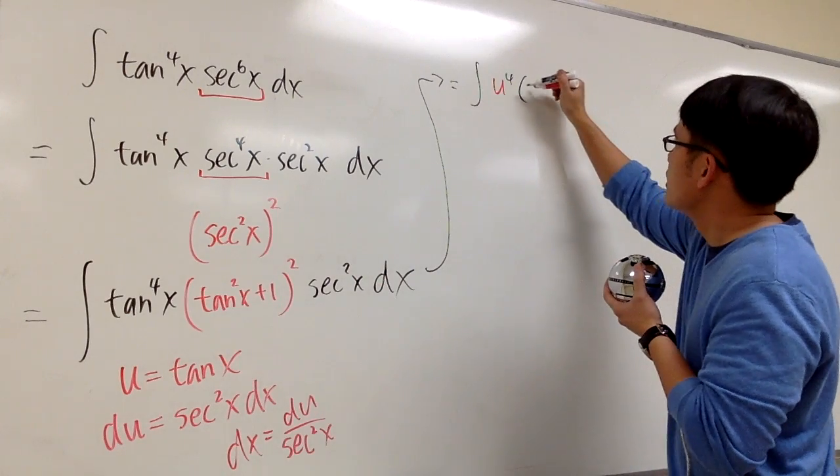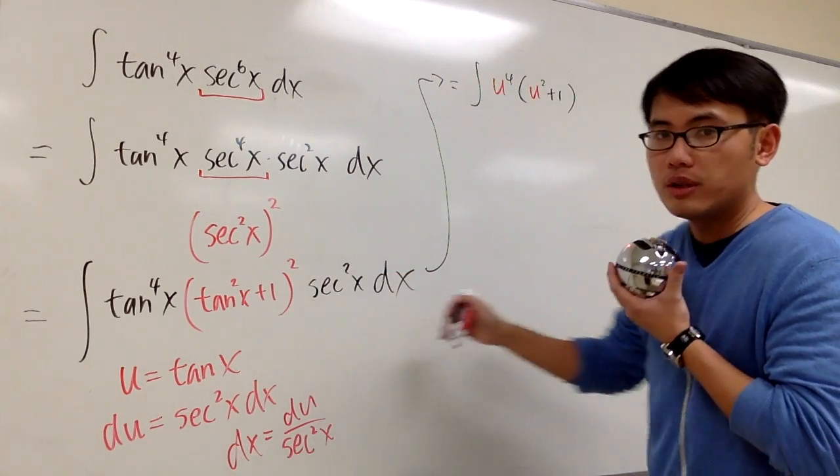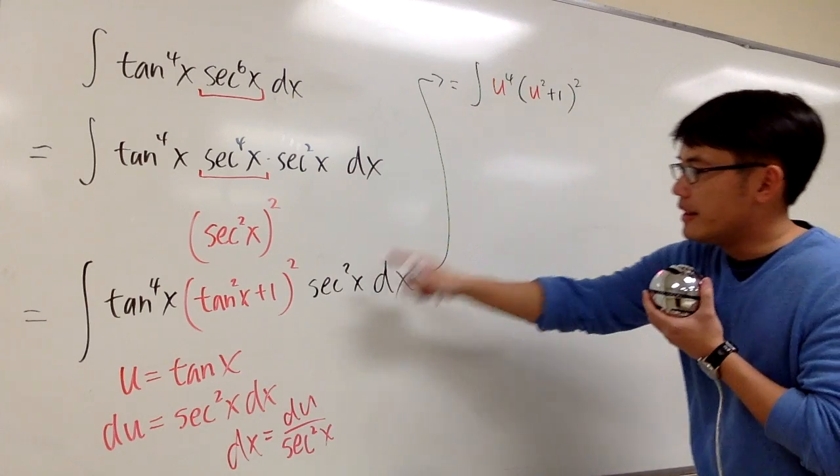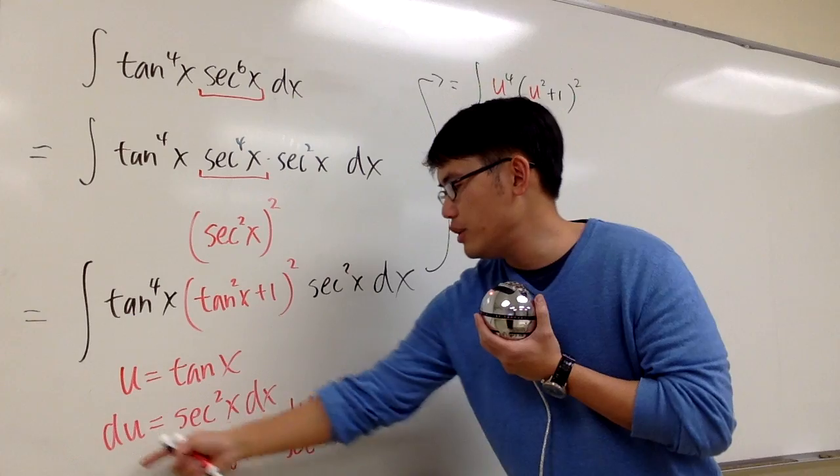Tangent is u, so we have u squared, plus 1, and then raised to the second power. And then the secant squared x dx, you know, you can also just use this if you would like, that's going to be du.